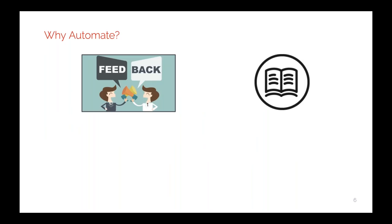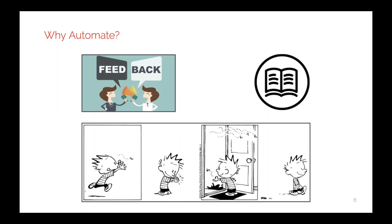The idea of automation is to get feedback — instant feedback as fast as possible. Also to have documentation, because our tests should describe how our application works. In addition to that, it's a good way to catch regression bugs, because when we make changes to existing functionality, all these regression tests help us avoid those situations. As an extra benefit of automation, we have the opportunity to spend less time on repetitive tasks and focus on more fun things like exploratory testing.